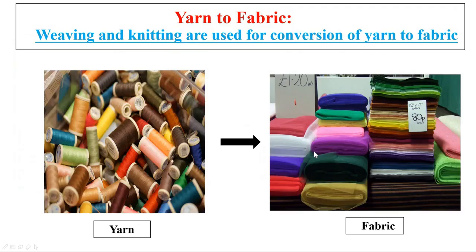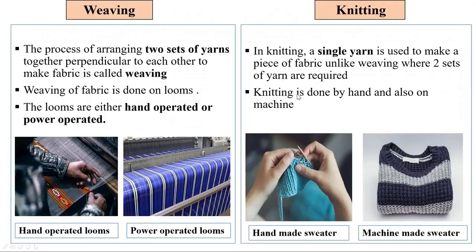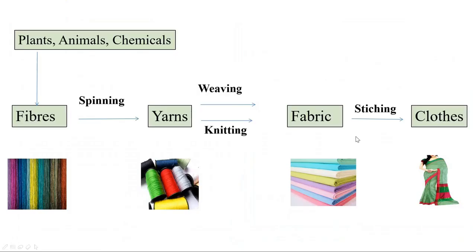Yarns are converted into fabric by weaving and knitting. Weaving is the process of arranging two sets of yarns together perpendicular to each other to make fabric. Weaving is done on looms, which are either hand-operated or power-operated. In knitting, a single yarn is used to make a piece of fabric, unlike weaving where two sets of yarns are required. Knitting is done by hand and also on machines.